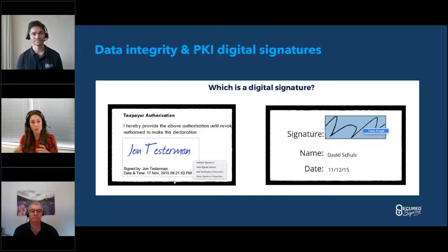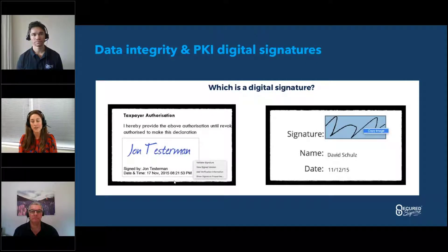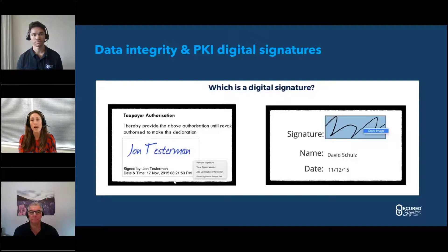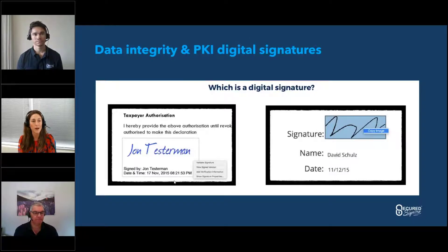All of those things together are sealed onto that document to form a valid binding signature. We use public key infrastructure digital signature technology. The specific technology we use at Secured Signing is a user-based PKI digital signature, and what that means is if you have a document with multiple people signing it, the moment the first signature is applied it seals the document so that it can't be edited — or if it was, it would invalidate all the signatures on it. It's a really robust process.